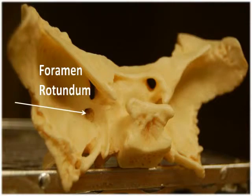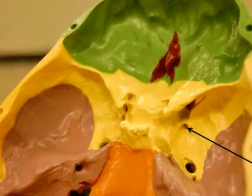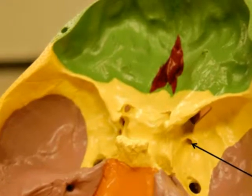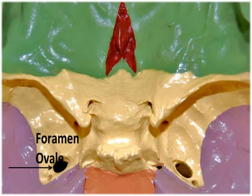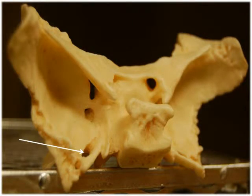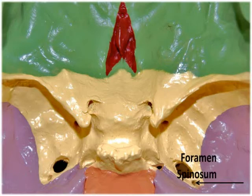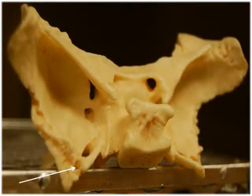The foramen rotundum is located where the anterior and medial sphenoid bone meets. Rotundum means round hole, and this foramen allows passage of the maxillary branch of the trigeminal nerve, which is cranial nerve 5. The foramen ovale are located towards the posterior of the greater wing. This oval hole has a very distinct shape and should be used as a landmark to locate the other foramina. It allows passage of the mandibular branch of the trigeminal nerve. Also in the greater wing, just lateral to the foramen ovale, are the smallest of the foramina, called the foramen spinosum. These tiny spiny openings allow passage of blood vessels to the meninges surrounding the central nervous system.